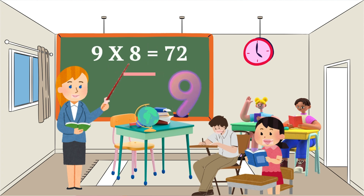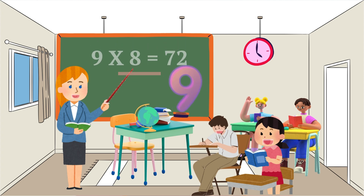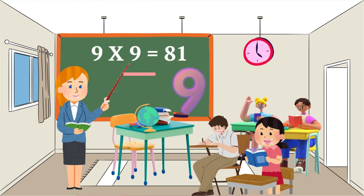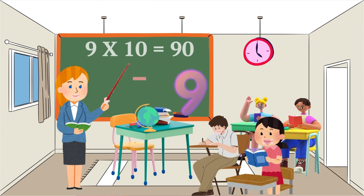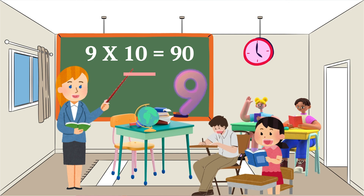9 eights are 72, 9 nines are 81, 9 tens are 90.